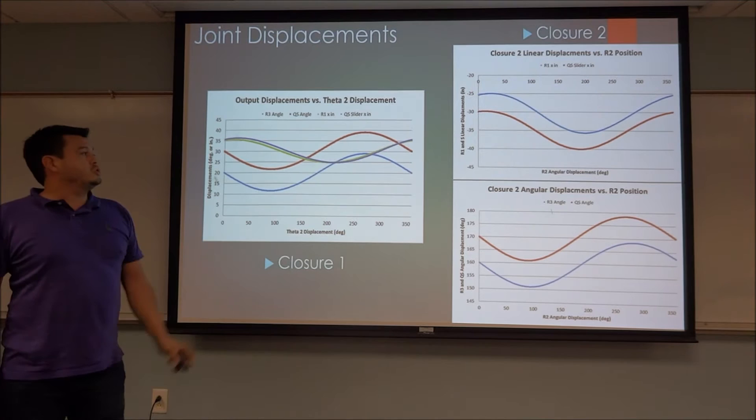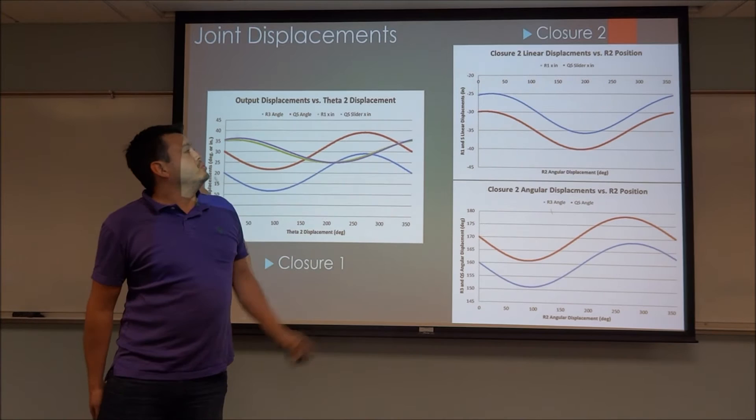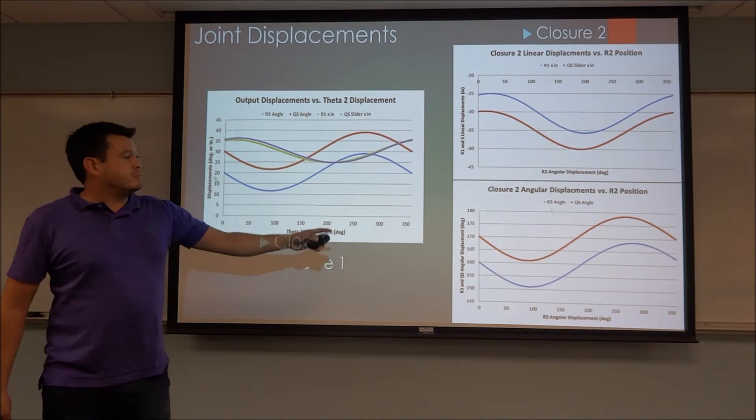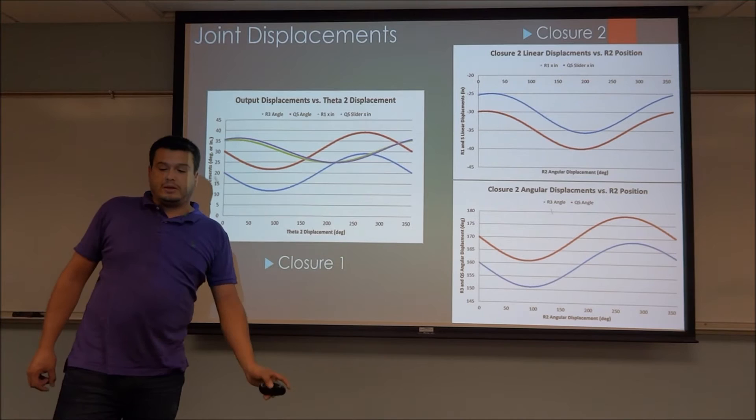R1 is moving in a linear motion, so it is measuring inches. We have the displacements for closure two for R1, and also the angular displacement for R2 and Rb versus R3, and the extension of the link.